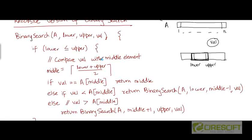Assuming lower is less than or equal to upper, we determine the index of the middle element of the sub-array. The middle index is ⌈(lower + upper) / 2⌉. We then compare the value we are searching for with a[middle]. If the two happen to be identical, we have found the value at this index, so we return middle.